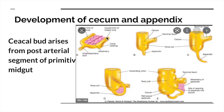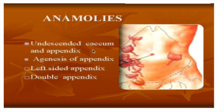Regarding development: the cecum and appendix both develop from the cecal bud, which arises from the post-arterial segment of the primitive midgut loop. Anomalies include undescended cecum and appendix, agenesis of the appendix meaning improper development, left-sided appendix, and double appendix.